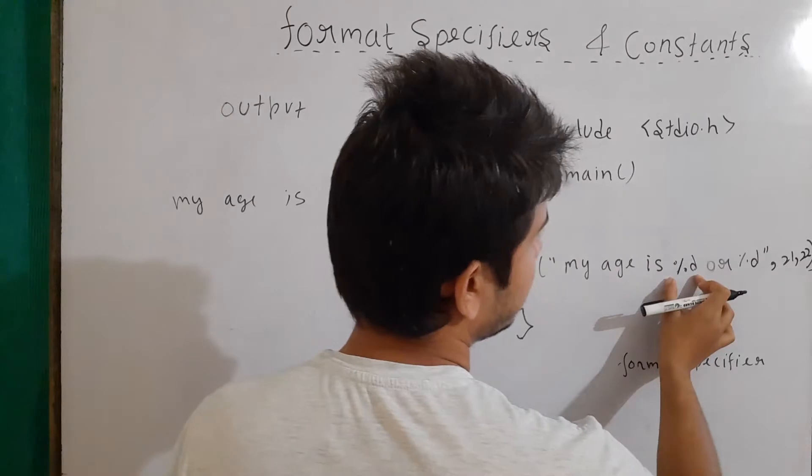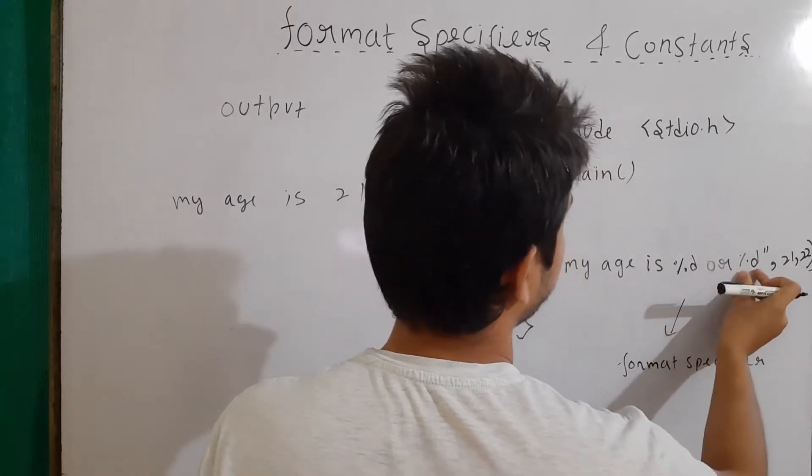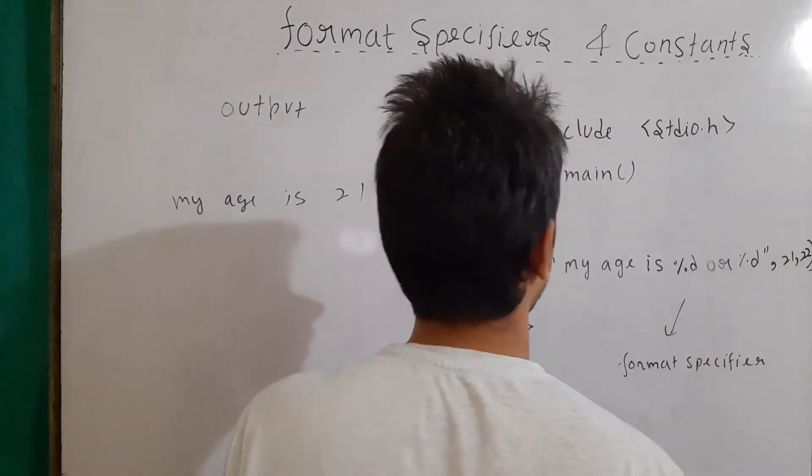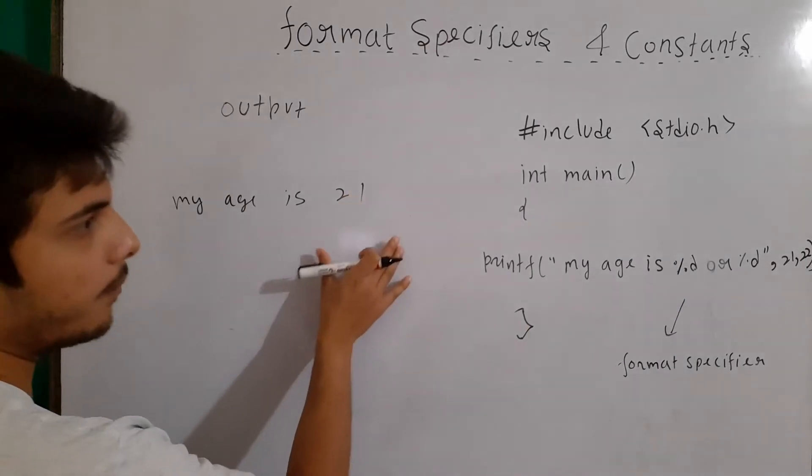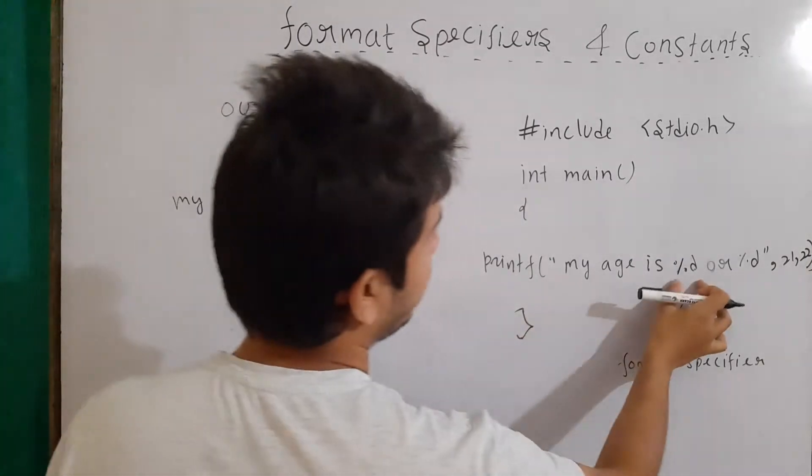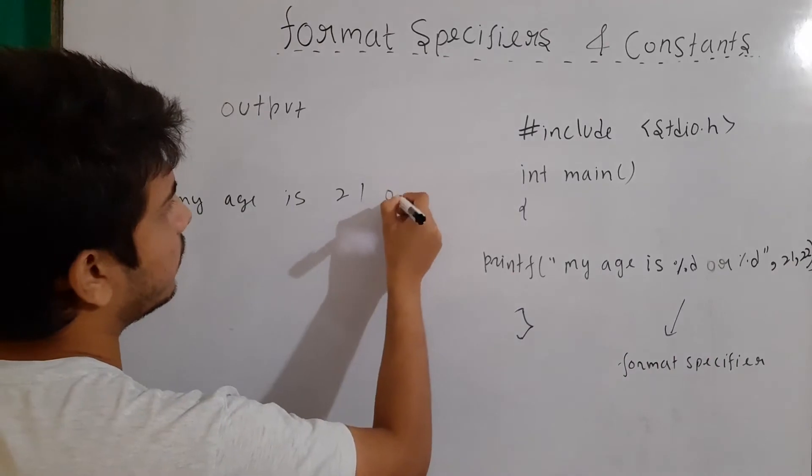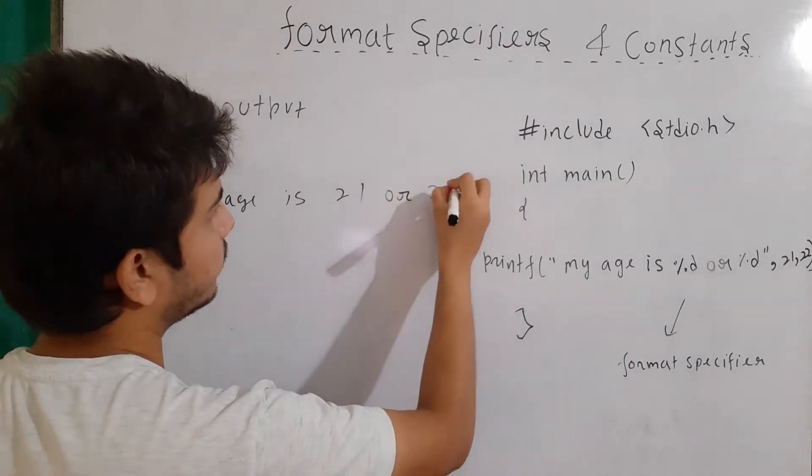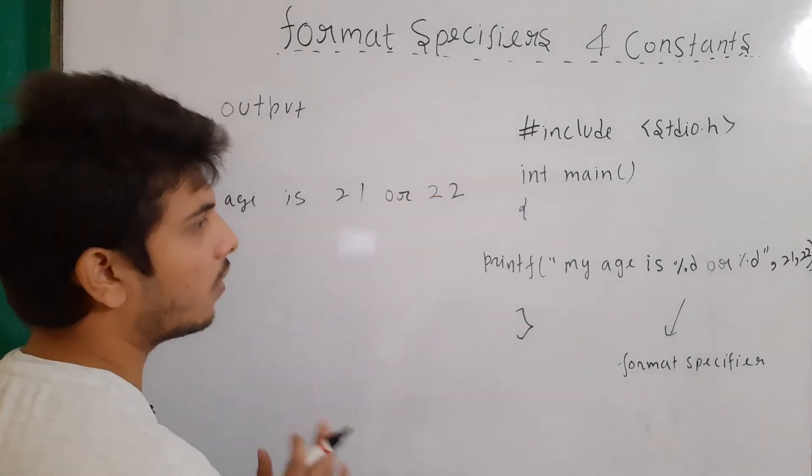In first format specifier, 21 will be written and in the second format specifier, 22 will be written. So our output after compiling and running will be my age is 21 or 22.